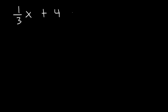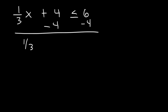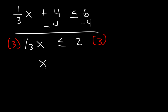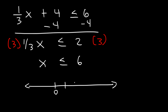Now let's try another example: one-third x plus 4 is less than or equal to 6. Feel free to pause the video and work on this example. Let's begin by subtracting 4 from both sides, so one-third x is less than or equal to 6 minus 4, which is 2. Next, let's get rid of the fraction by multiplying both sides by 3. 3 times one-third is 1, so we're left with just x. 2 times 3 is 6, so x is less than or equal to 6.